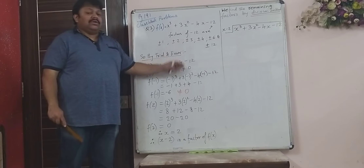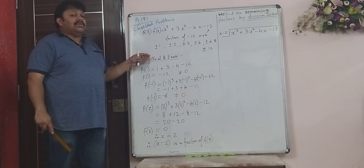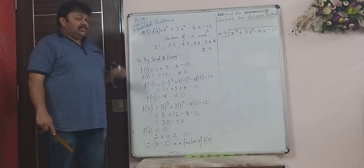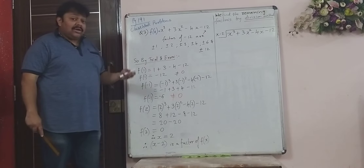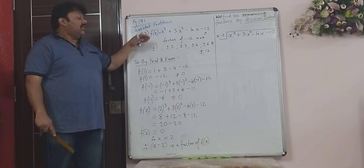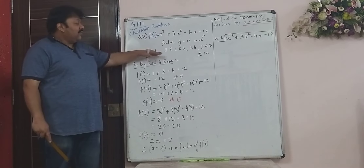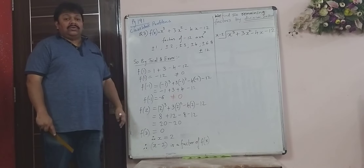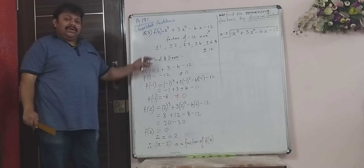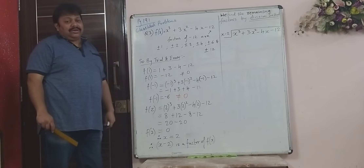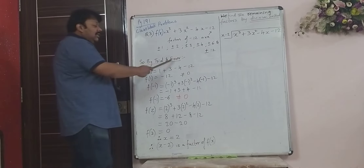Since these are the factors of 12, we have to do trial and error and see what is f(1) — does it come equal to 0? If not, then f(-1), does that equal 0? Then f(2), and so on. Usually in the first or second attempt, on 1 or 2 itself, you will find that one of them is the factor.